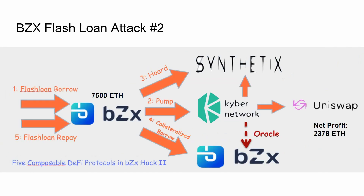BZX was having a very bad week, and a second attack struck them. This time it was more complex because they targeted a coin with much less liquidity: SUSD, or synthetic US dollar, a stablecoin. The attacker flash-borrowed 7,500 ETH from BZX, then took a portion of that money and pumped the price of SUSD on Kyber Network — whose oracle is used by BZX. Because Kyber didn't have much SUSD liquidity, a relatively minor purchase doubled the price, so a stablecoin that should have been $1 jumped to $2 on Kyber.